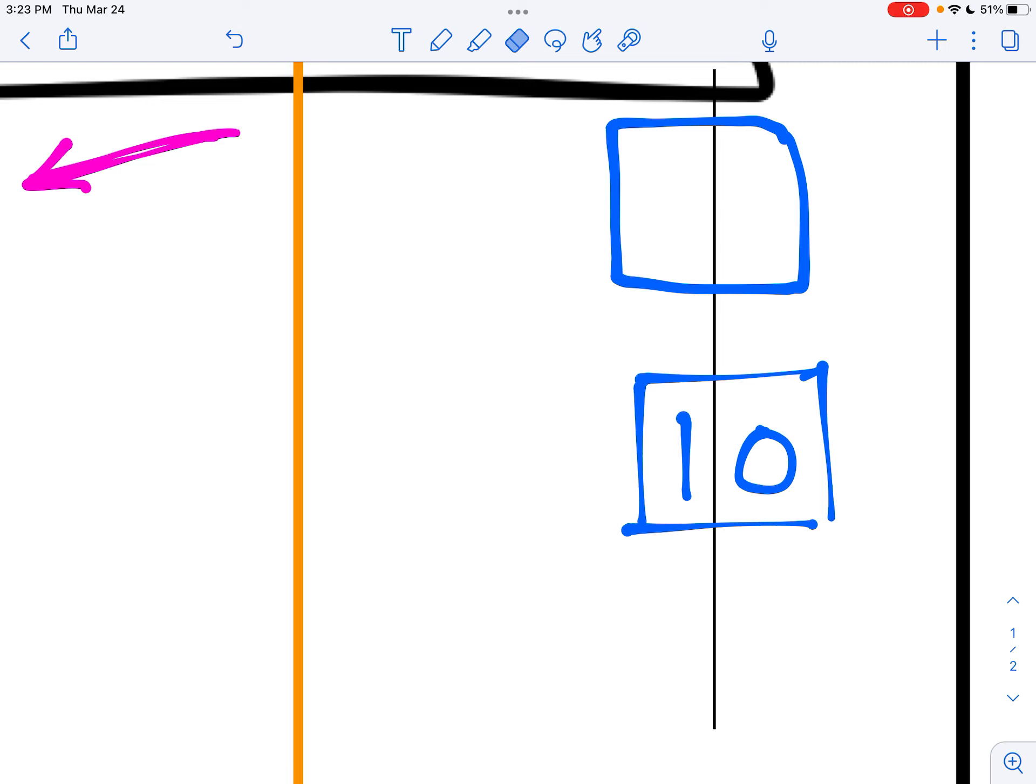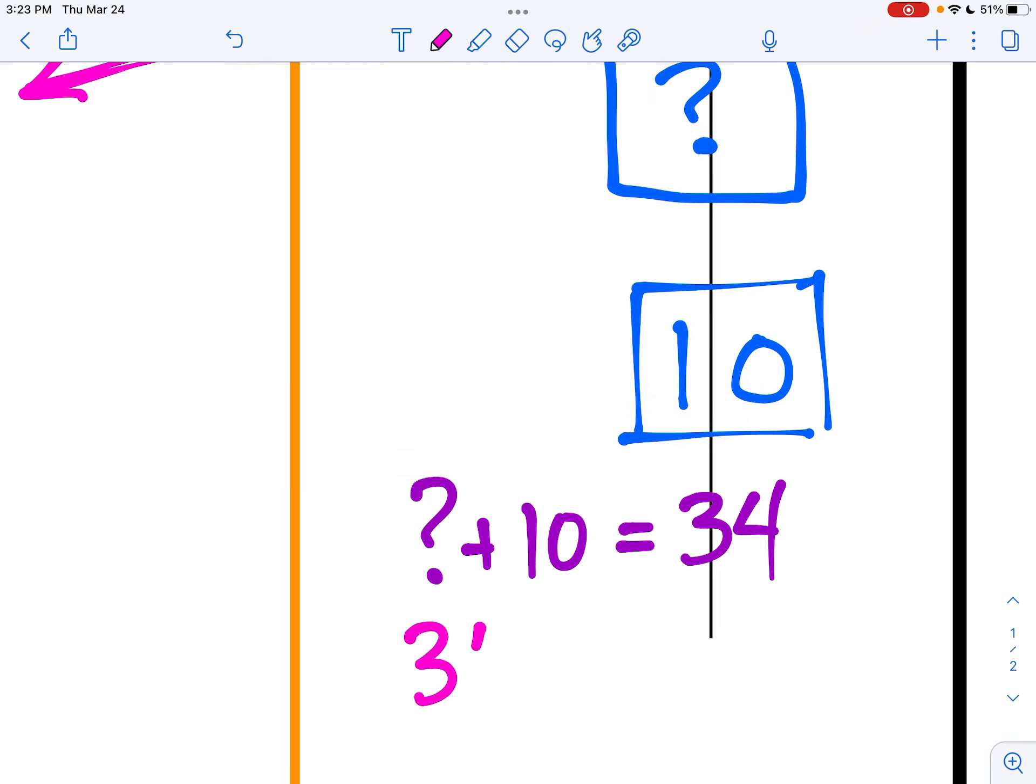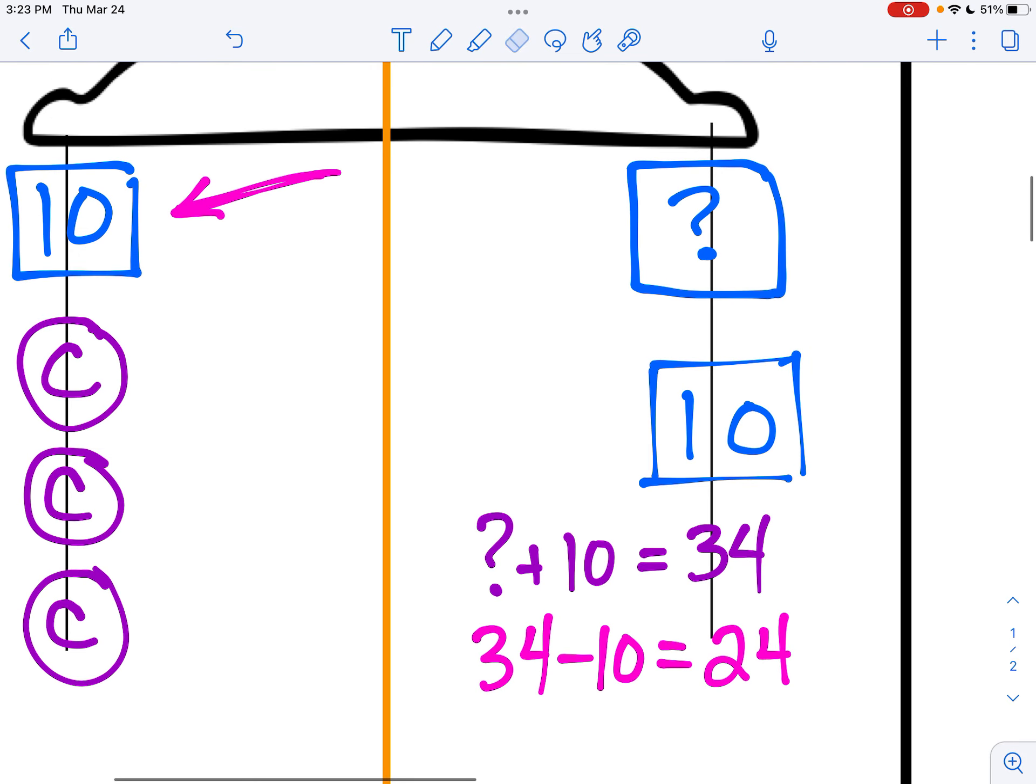I need to change the top number to something that when I add 10 together, it will equal 34. Plus 10 equals 34. If you know that number, you can just write it in the top box. But if you don't know the number, you need to switch this around to a minus problem. 34, take away 10, will get you 24. And that number is the one that goes up in the top box.